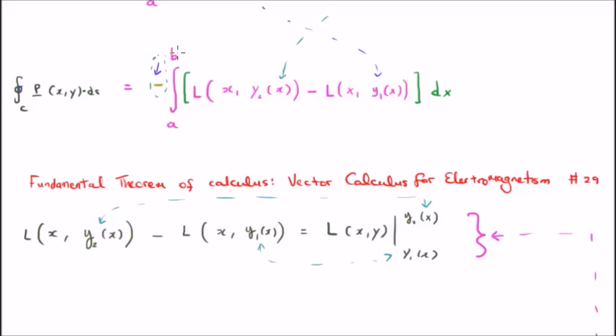More specifically, what we can say is if we ignore all of this here, we have the result of the fundamental theorem, namely the difference between L of x and y2 and L of x and y1. This, of course, can be rewritten in another way, using another piece of nomenclature, where we say we have the single function L, a function of x and y, evaluated at the endpoints, y1 and y2.